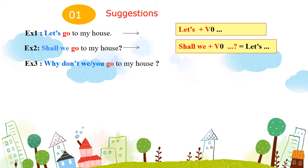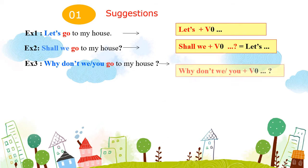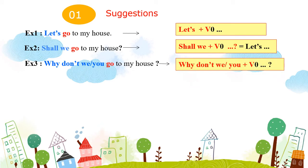Ví dụ thứ 3: "Why don't we" hoặc "Why don't you go to my house?" – Tại sao chúng ta không đến nhà tôi? / Tại sao bạn không đến nhà tôi? Dùng cấu trúc câu hỏi với Why don't we hoặc Why don't you cộng với động từ nguyên mẫu.